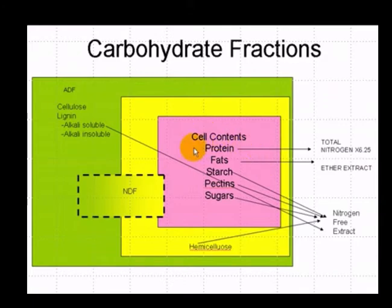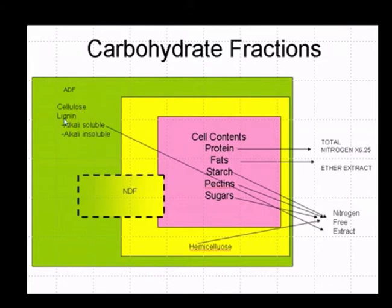There's a component that contains the cell contents — the protein, fat, starch, pectins, and sugars — and then there's the actual cell wall that surrounds the cell sap. In the cell wall, we have the acid detergent fiber, which contains the cellulose, the lignin, and we also have a component of the NDF as well as the hemicellulose. These are components that formulate the various components of the cell in various plants.